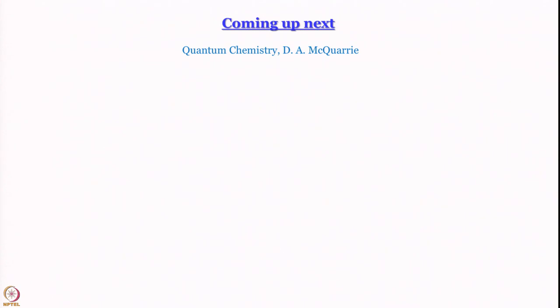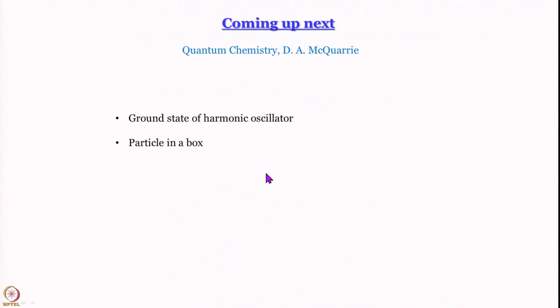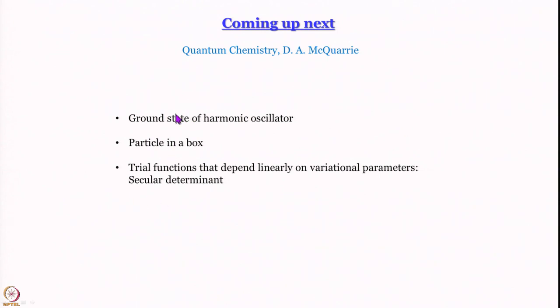That is what we have learned today, following McQuarrie's Quantum Chemistry. Next, we will use Pilar's book as well. We will see how to get the ground state energy of the harmonic oscillator and energy levels of the particle in a box using the variation method. We will also show that for trial functions depending linearly on variational parameters, we obtain a secular determinant, which simplifies the solution — a cornerstone for variational problems. Finally, we will apply both the variation and perturbation methods to multi-electron atoms.